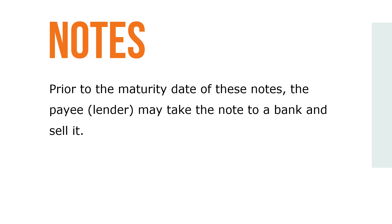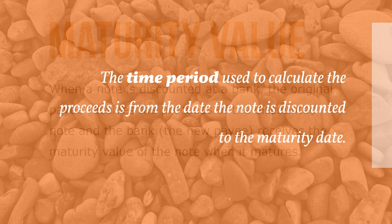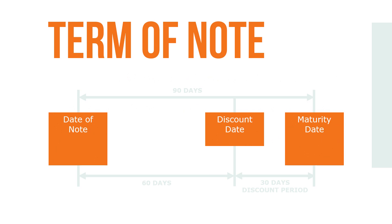At any time before maturity, this process is known as discounting a note. When a note is discounted at a bank, the original payee receives the proceeds of the discounted note, and the bank — the new payee — receives the maturity value of the note when it matures. The period of time used to calculate the proceeds is from the date the note is discounted to the maturity date. This is known as the discount period.